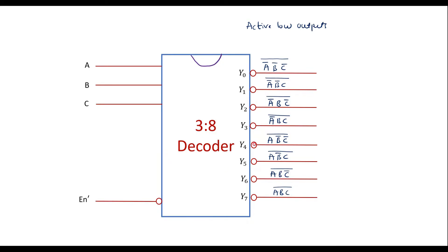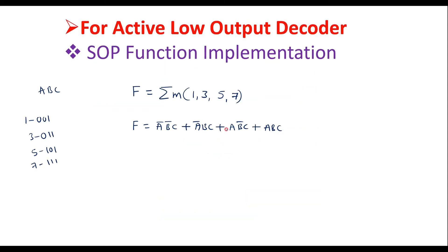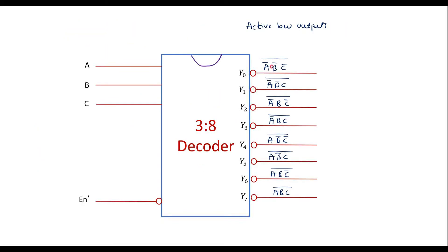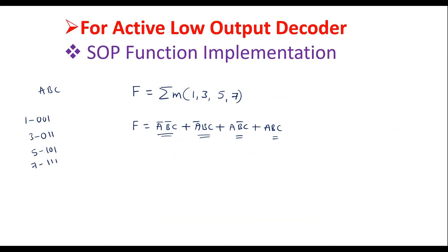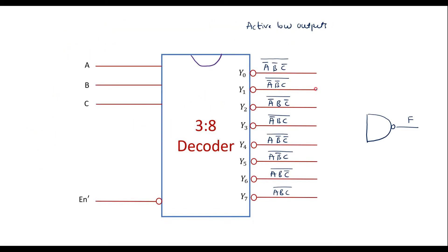Now with the help of this active low decoder we will try to implement SOP. In SOP there are product terms — sum of product terms. To implement this using an active low output decoder, we consider the same lines: 1, 3, 5, and 7. Here we should use a NAND gate. We connect outputs 1, 3, 5, and 7 to a NAND gate, and its output is f.